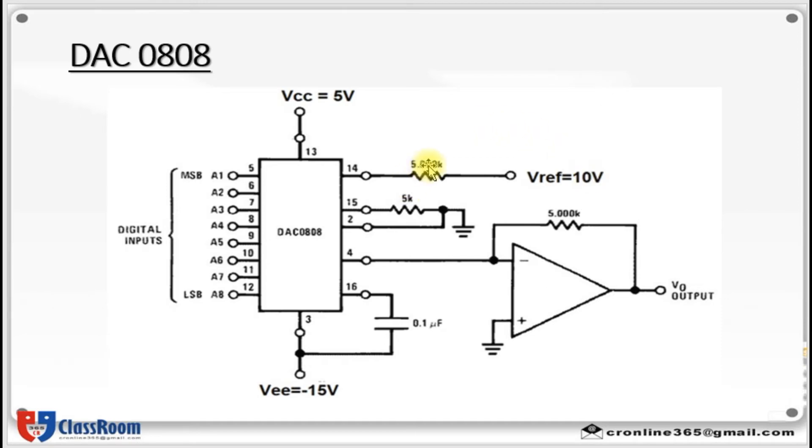10 volt divided by 5k will give you 2 milliampere. Generation of current reference by using this standard 10 volt supply as well as standard 5k resistor. Then V reference minus is grounded. The analog output can be found by means of this 5k resistor.